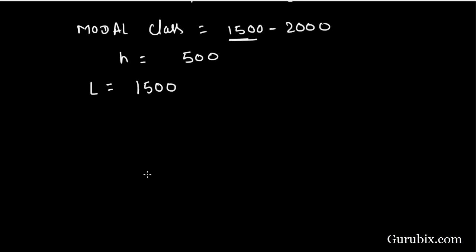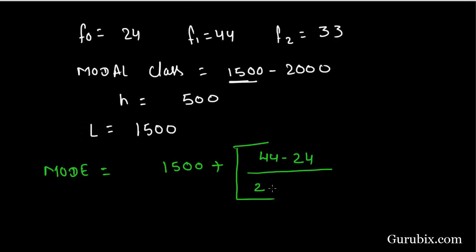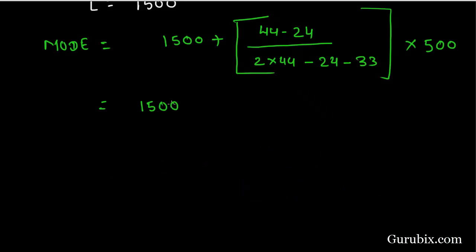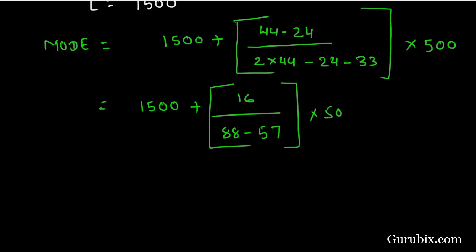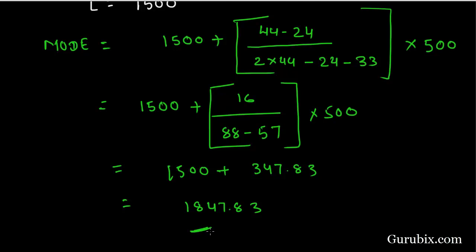Now we substitute these values into the formula of mode. Mode equals 1500 plus (F1 minus F0) divided by (2F1 minus F0 minus F2), into H. This gives 1500 plus 20 upon (88 minus 57), into 500, which equals 1500 plus 16 upon (88 minus 57), into 500, equal to 1500 plus 347.8, equal to 1847.8. Hence our mode is 1847.83.